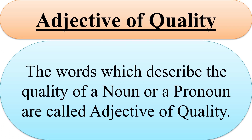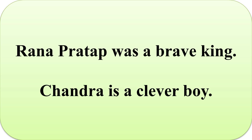The words which describe the quality of a noun or a pronoun are called Adjectives of quality. For example: 'Rana Pratap was a brave king' and 'Chandra is a clever boy.' Here, 'brave' is the quality of 'king' and 'clever' is the quality of the noun. So, these are Adjectives of quality.